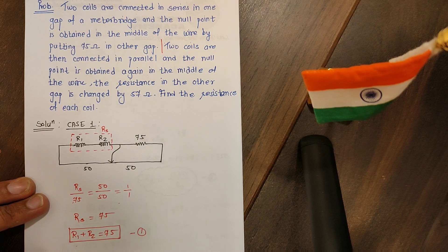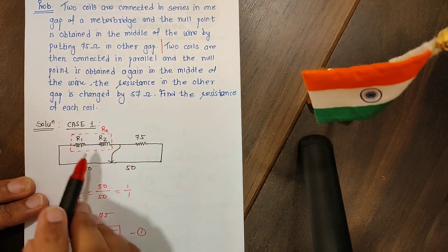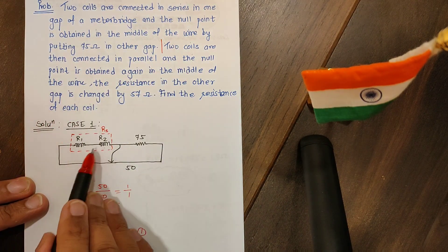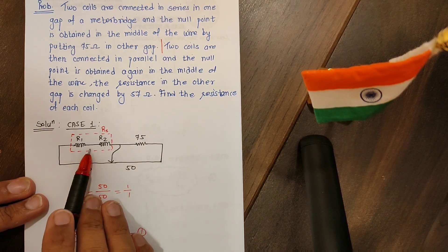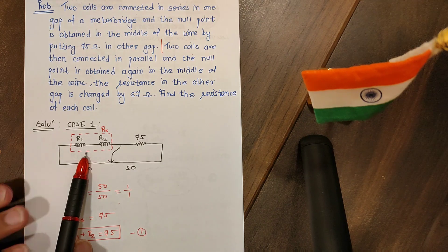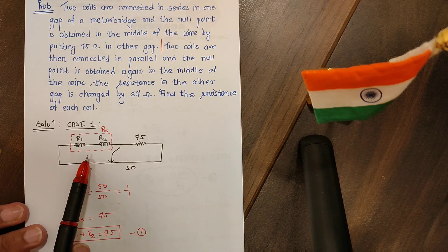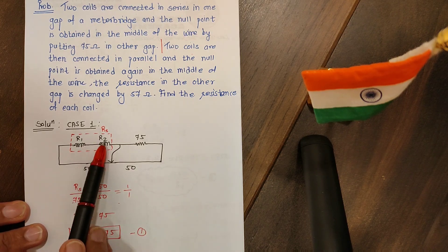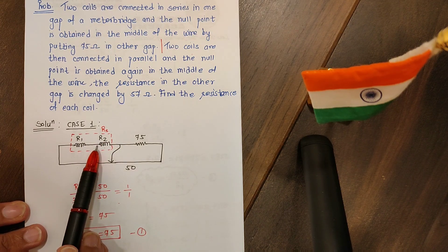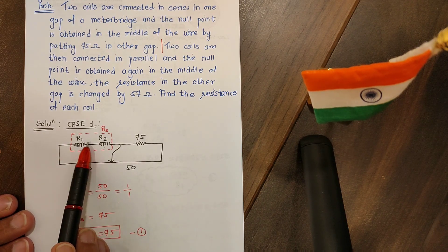That was Case 1. Now in Case 2, the two coils are connected in parallel instead of series. Remember that in series the net resistance increases, but in parallel the net resistance decreases. So by switching from series to parallel we are reducing the resistance of the left gap.